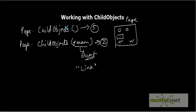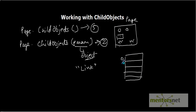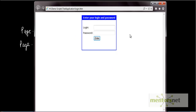Child objects returns a collection of objects. Let's say it returns five objects, so the collection contains indices 0, 1, 2, 3, 4. You can access these objects by their index number. For example, index 0 may be a radio button, index 1 another radio button, index 2 an edit box, index 3 link 1, and index 4 another link. You need not define the properties of these objects again and again; you can directly access them by the index of this collection.